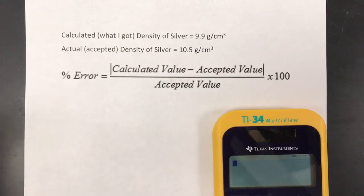For example here, I calculated the density of silver and I got it to be 9.9 grams per centimeter cubed. The actual density of silver that you can google or look up in a book is 10.5 grams per centimeter cubed.